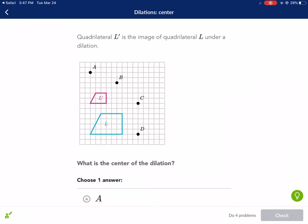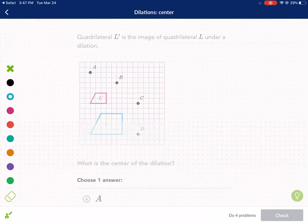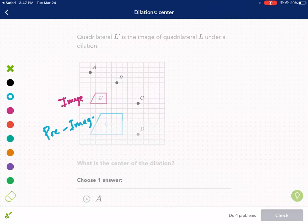The question asks us: quadrilateral L prime is the image of quadrilateral L under a dilation. Let's put this into perspective. If L prime is the image, what does that make quadrilateral L? That makes it the pre-image. Before it undergoes a transformation, in this case a dilation, this pre-image goes into this image. If we take a look, the pre-image is much larger than the image, so this is a dilation but it's specifically a reduction.